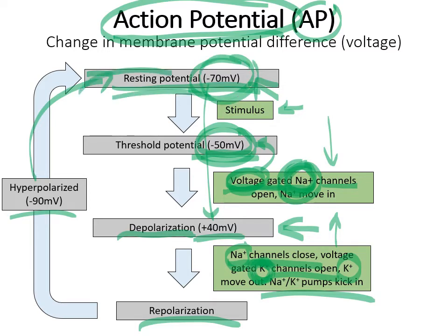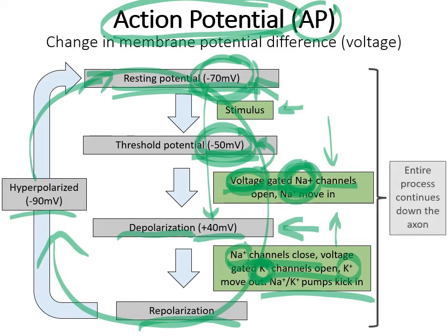This whole sequence of events is called an action potential, and it happens for each part of the membrane. While one part is going through this action potential, it will actually cause the neighboring part of the cell membrane to start to go through one as well. You get this cascading series of events being passed down along the membrane of the axon. The entire process starts at one point and then moves down the axon.